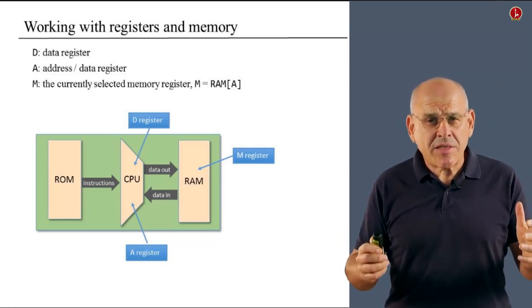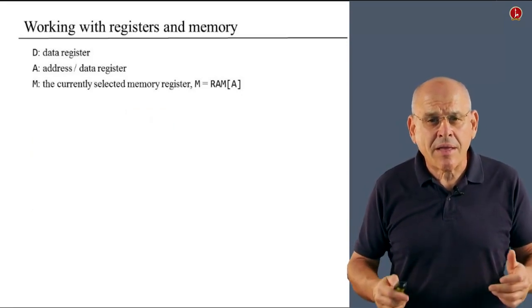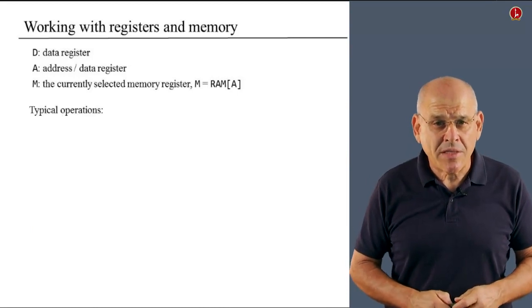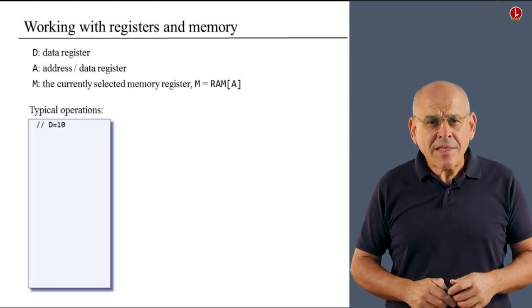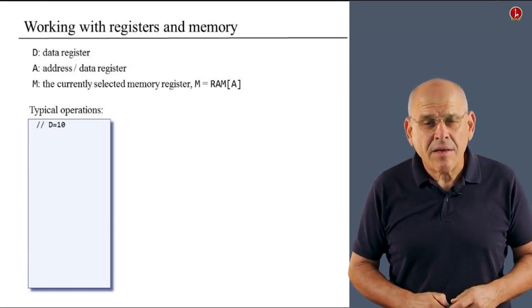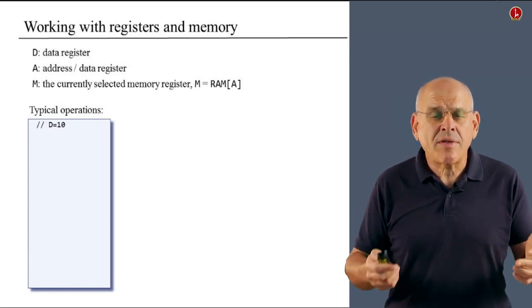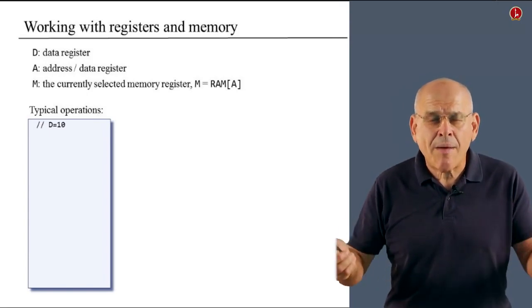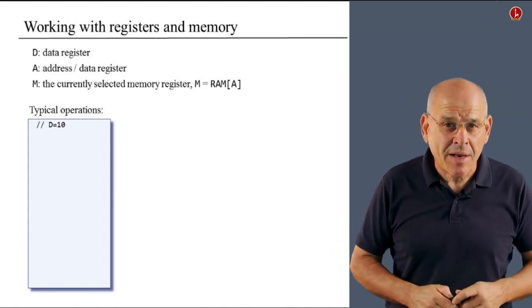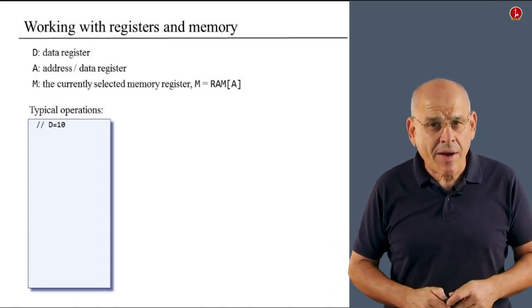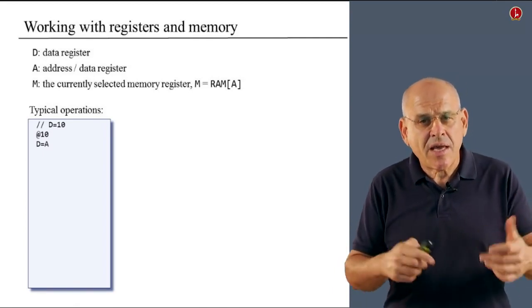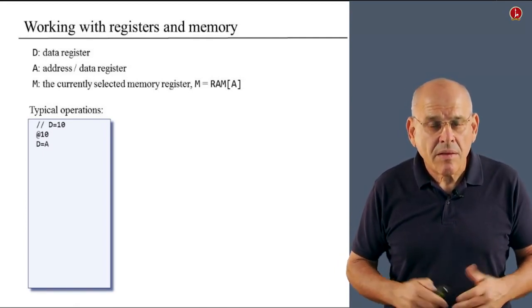If you recall, the A register has this nice side effect that when you load it with a particular value, it ends up selecting one register from the RAM. This register, in our language, is called M. So we can then say something like M equals minus 1, or M equals 0, and so on and so forth. All right, so these are the registers of interest that we're going to manipulate. And here are some examples of what actually can be done with these registers.